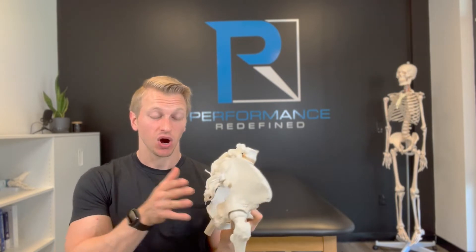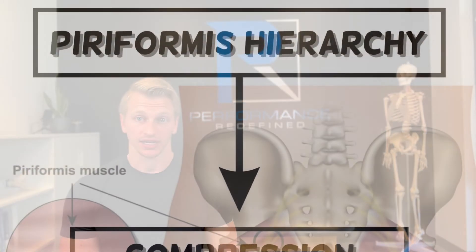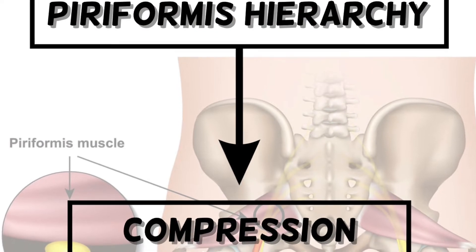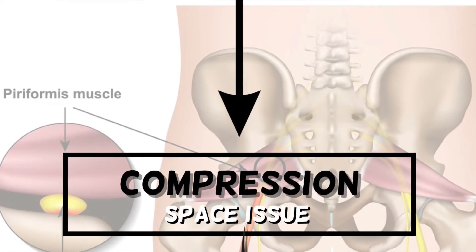Now that we understand what's going on at the posterior lower pelvis, let's look at the two main reasons why this happens. To better understand how to approach this, I want to break it down into a hierarchy. At the top of the hierarchy, think compression — compression is the main and root problem. For one reason or another, your patient doesn't have enough space. The tissues are compressing on the nerve, things are getting pushed, and they're experiencing the symptoms they've told you.